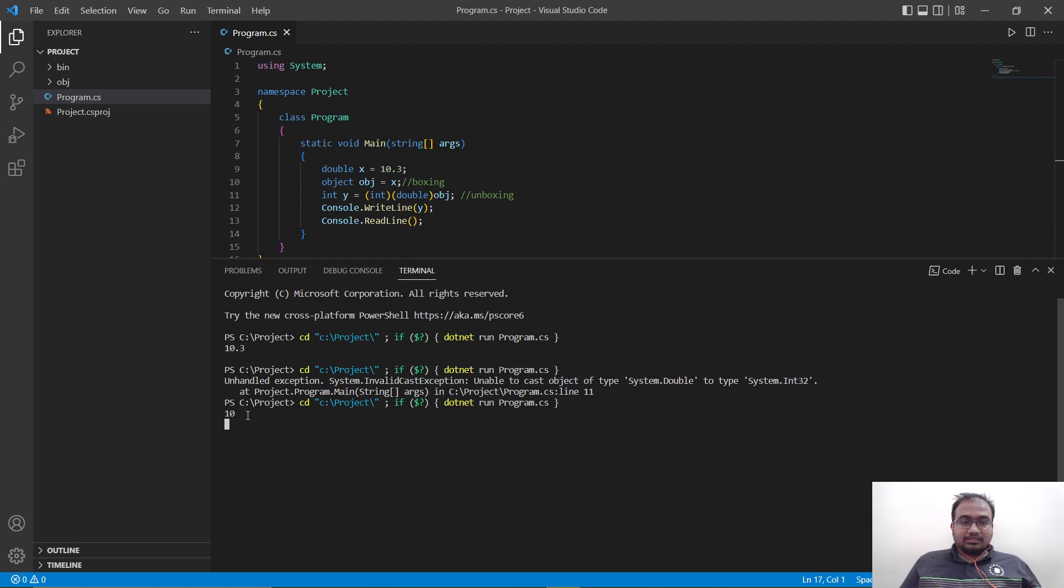And as you can see, it is now printing 10. Why is it printing 10 instead of 10.3? Well, because we have now converted a double into an int. An int doesn't have decimal points. So that's why it is printing 10. Let's get back to our slides.